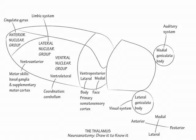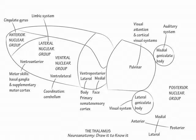In the posterior third of the thalamus, show the pulvinar, which is a subcategory of the lateral nuclear group. Indicate that it connects with the visual attention system in the pre-tectal nucleus and the cortical visual system in the temporal parietal association areas.